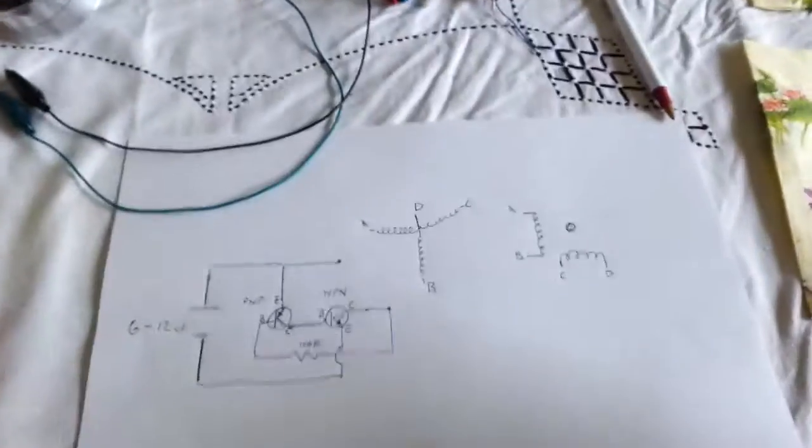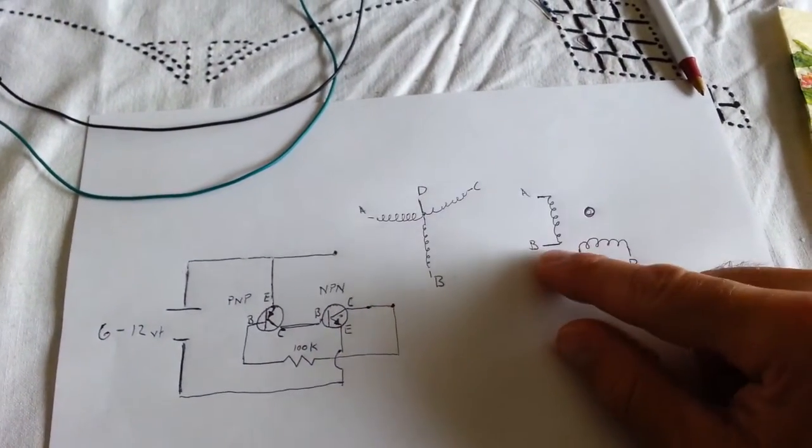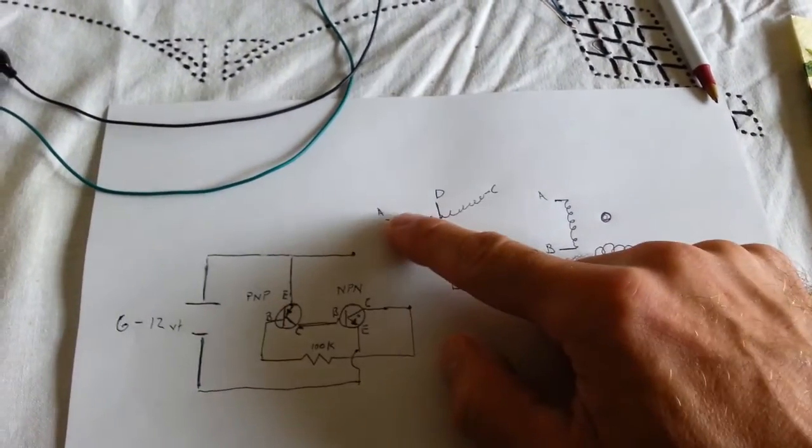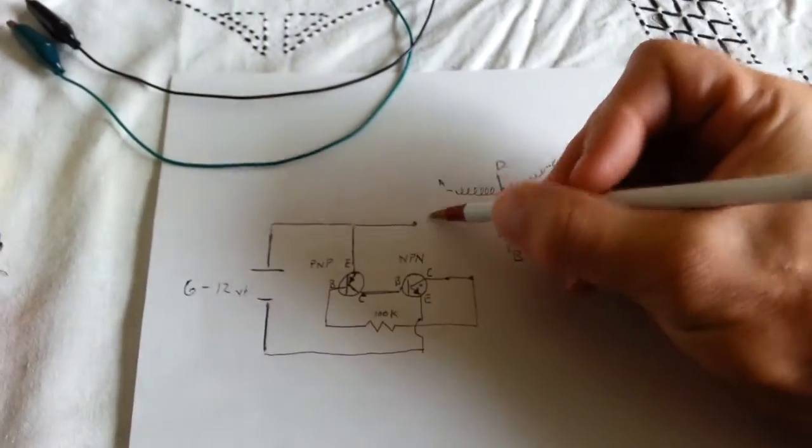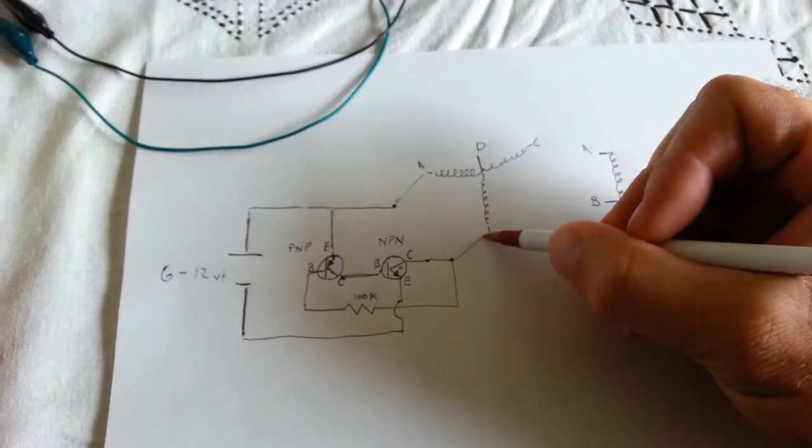But just like in the stepper motor setup where I had it running off of A and B, this one's running off of A and B at these two points. So what I did was connect them right here and connect them right there.